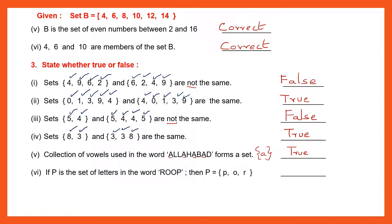Question 6: If P is a set of letters in the word ROOP, then set P = {P, O, R}. What are the letters in ROOP? R — yes, O — yes, we don't repeat it so we write it only once, P — yes. So this statement is true.